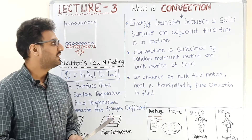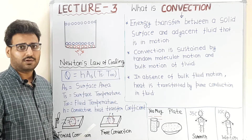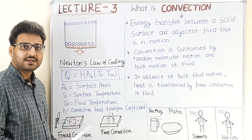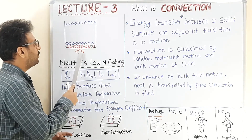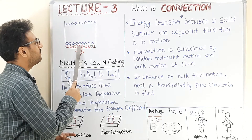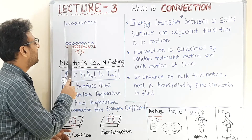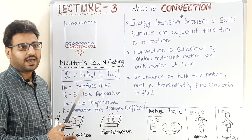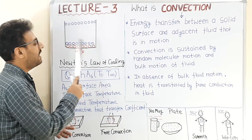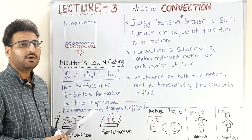We are going to discuss this with the help of an example. Suppose it is a pan and it is heated at the bottom. The fluid layer is denoted here by red circles. Due to the heat transferred from the bottom of the pan to the molecules of the fluid, heat is transferred from solid to the fluid, and the temperature of these molecules increases.